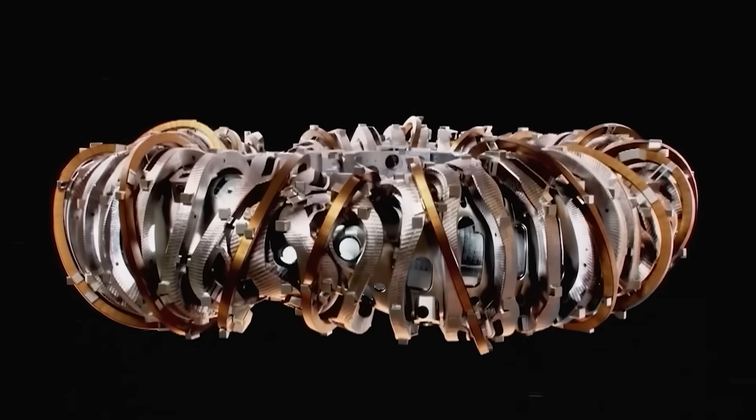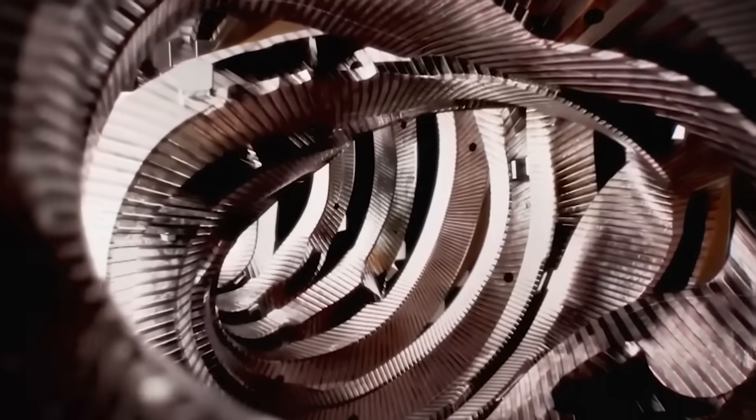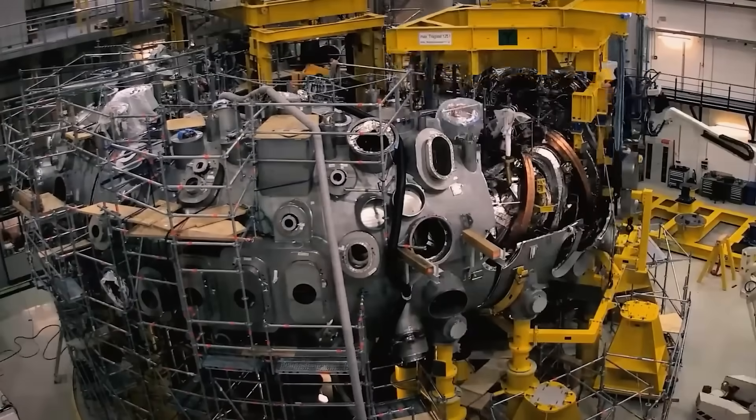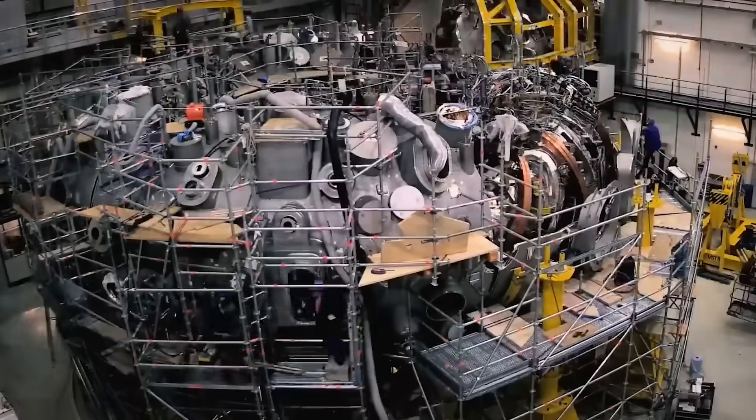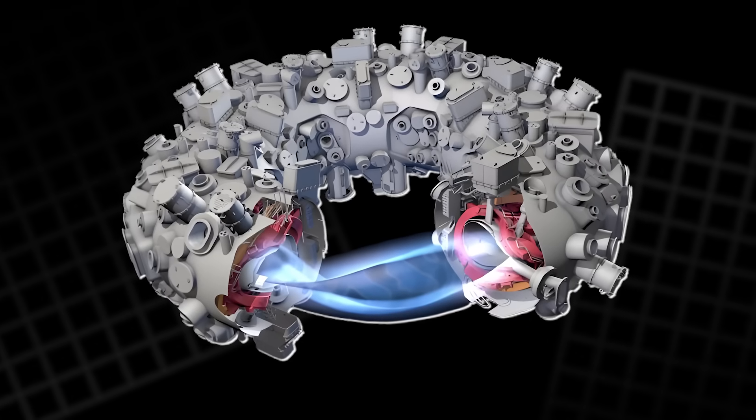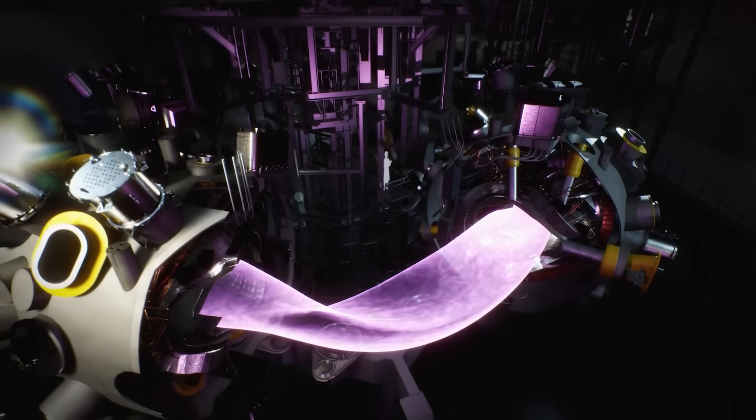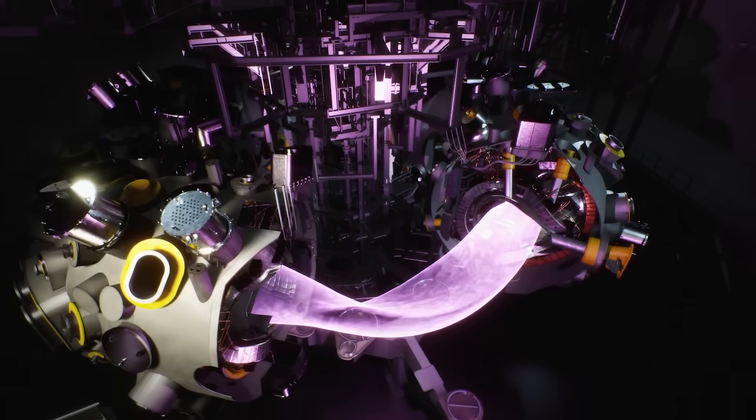The parts must be aligned within about a millimeter, even though they weigh tons. German engineers built new tools and robots just to position and check them. This is why the machine looks like a twisted sculpture. That twist is not for style.